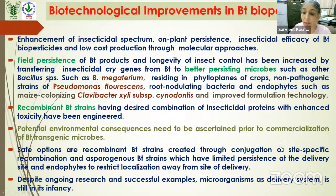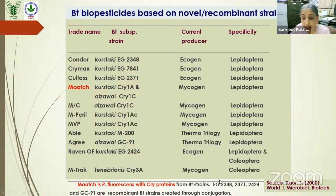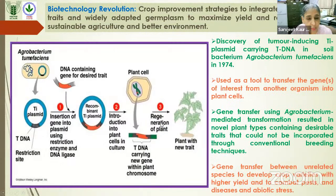Safe options include transferring genes through site-specific recombination or by conjugation, which occurs naturally in microbial strains. Despite much research, these microorganisms as delivery systems have not been very successful. Some examples of novel or recombinant strains developed as Bt biopesticides include Pseudomonas fluorescens with cry protein, and other strains carrying more genes by conjugation.